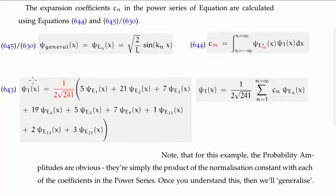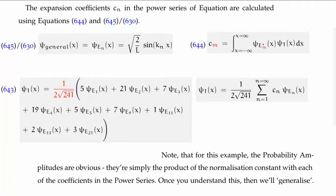Let's say we're given psi sub one and we want to know all of the c sub n's. It's a moot point for this particular example since I've done it as a linear combination of basis states, so the probability amplitudes should be pretty obvious. For example, the probability amplitude for the n=1 basis state is going to be the product of five and one over two root 241. The probability amplitude for the n=11 basis state is going to be the product of one and one over two root 241. Please bear with me as I'm making sure we come from a position of knowledge before I generalise.